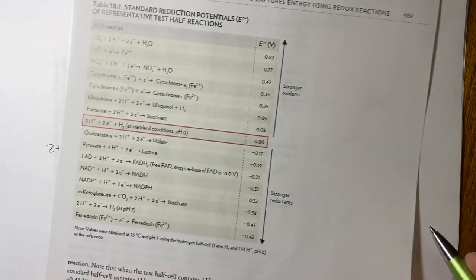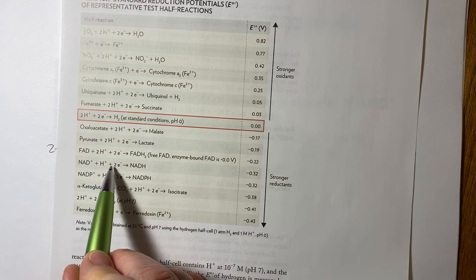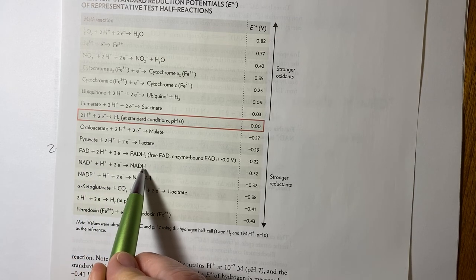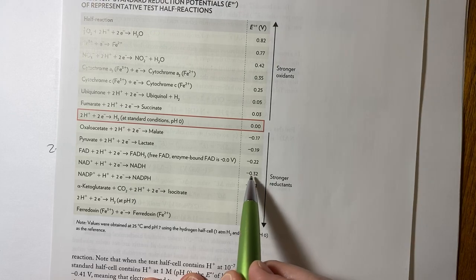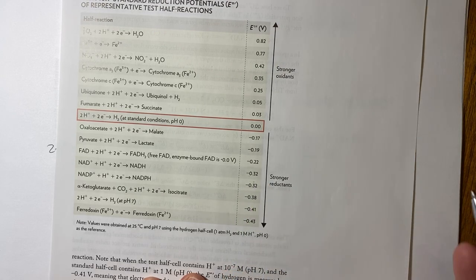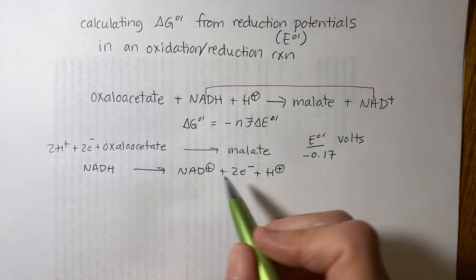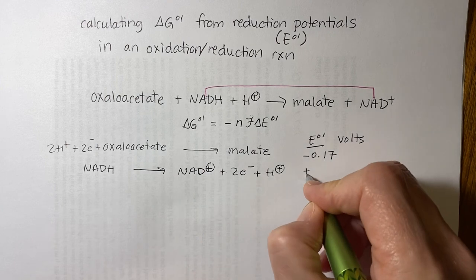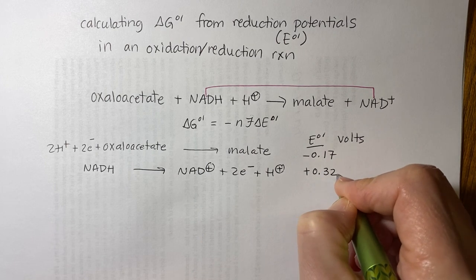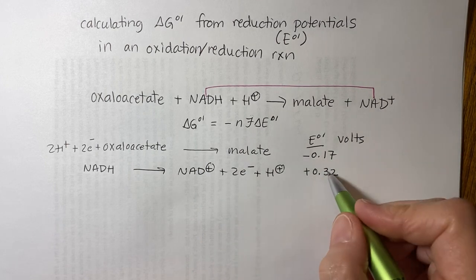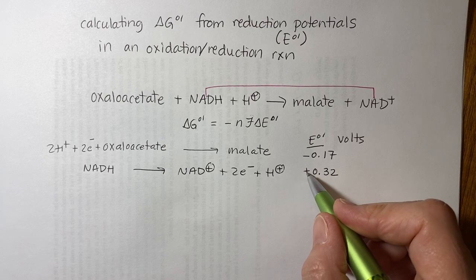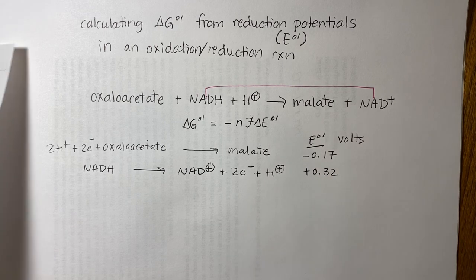And I'm getting that just from the table. So NAD plus, plus hydrogen, plus two electrons, equals NADH. The reduction potential is minus 0.32. But remember, it's reversed. So you change the sign if you reverse the reaction. The magnitude's the same, but you change the sign if the reaction's reversed.